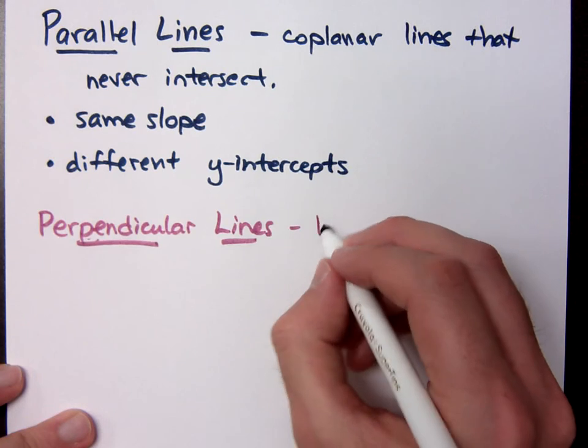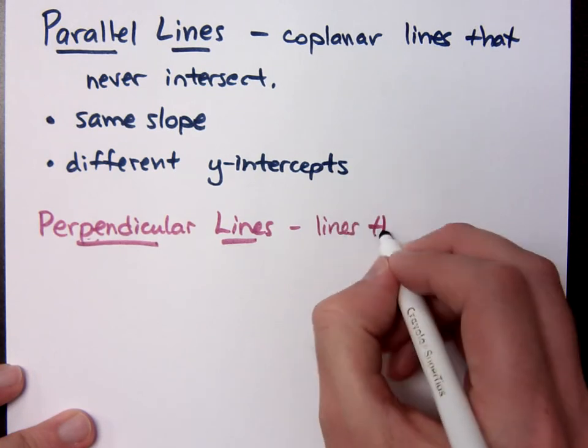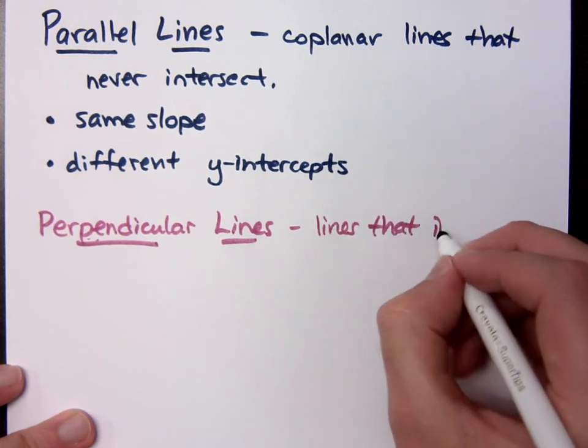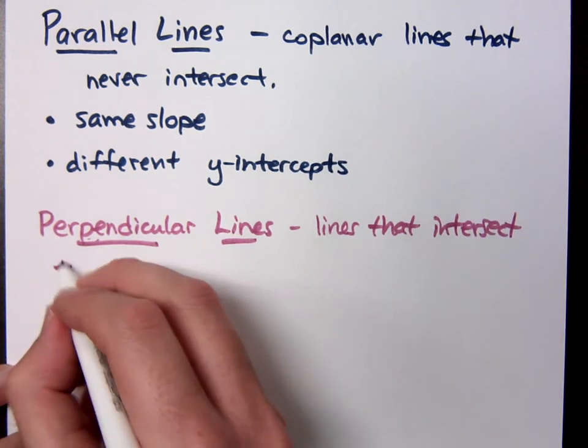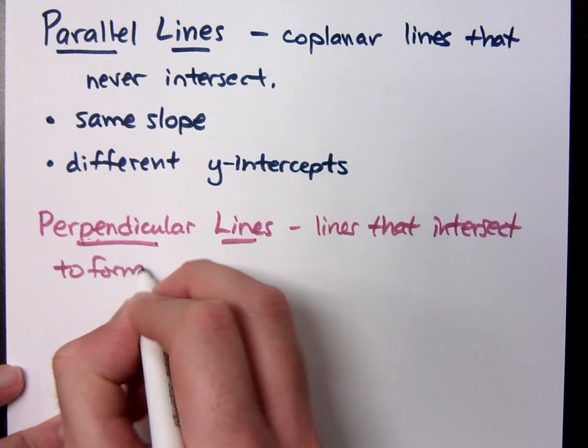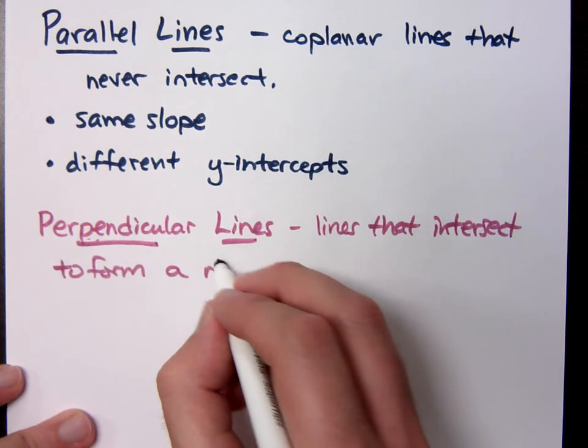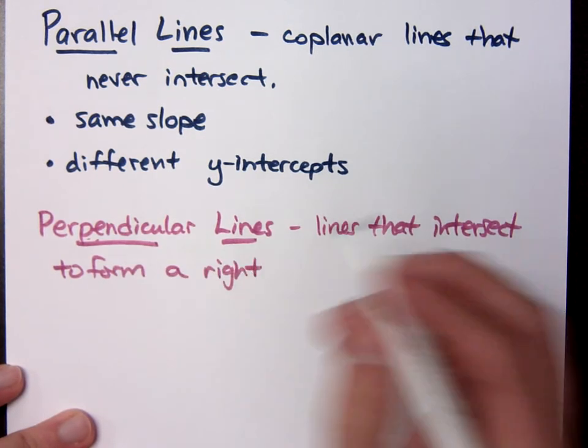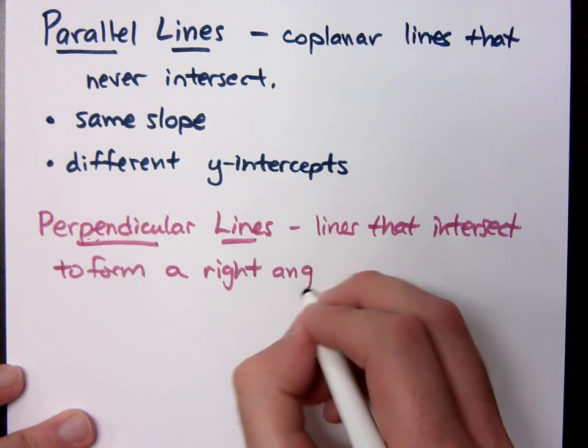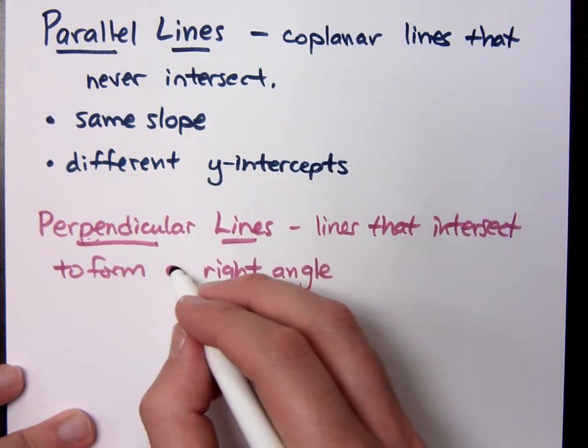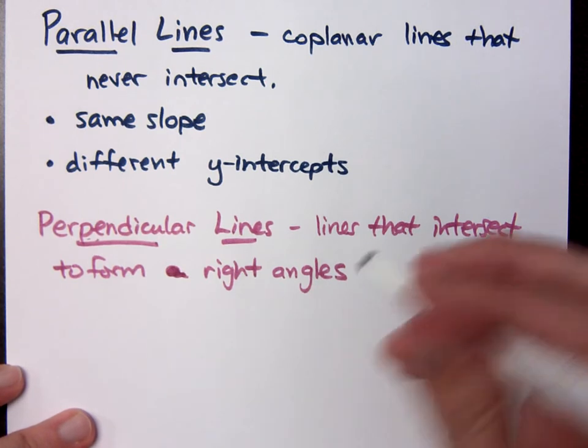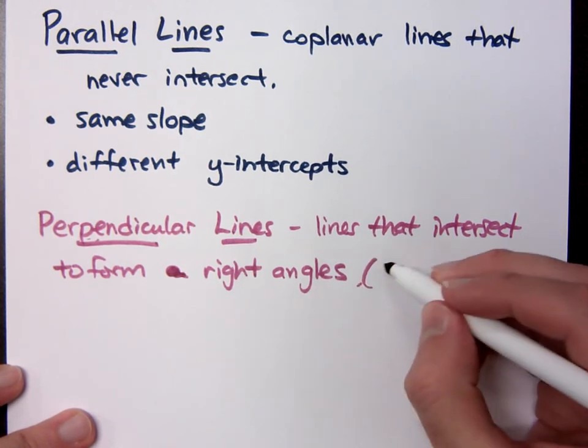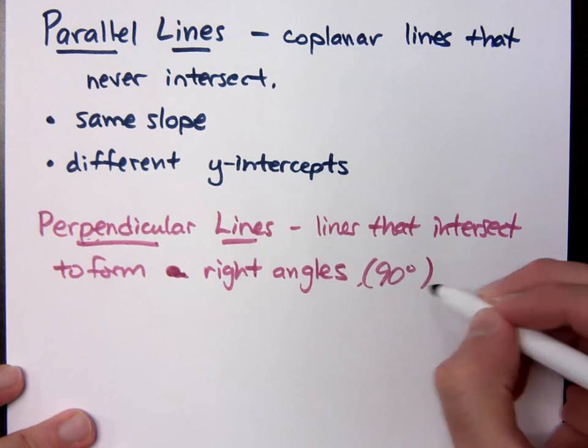Alright, these are lines that intersect to form a right angle, or to form right angles. Lines that intersect to form right angles, where right angles are those guys that are 90 degrees.